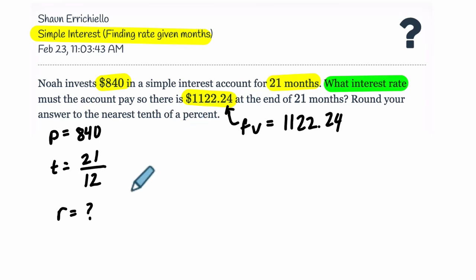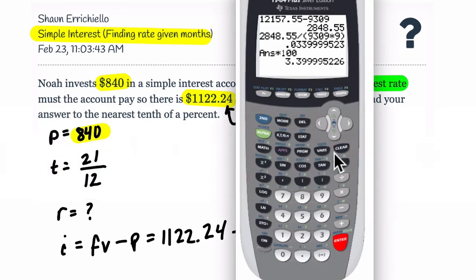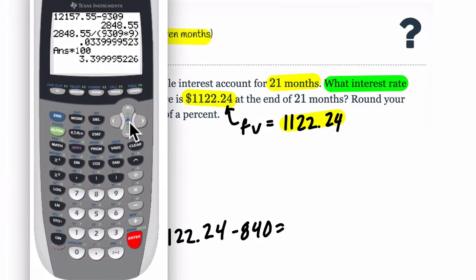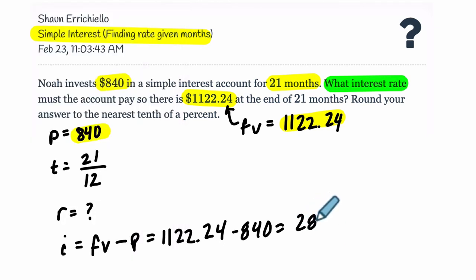Alright. So round your answer to the nearest tenth of a percent. So we need to find the interest that we're getting in this account. And that's got to be the future value minus the principal, right? So we're doing future value, 1122.24, minus principal, 840. So that tells us how much money we're actually getting in the account over those years. What is that total interest? So let's solve that on a calculator. 1122.24 minus 840. And this is our interest, 282.24. So we have almost $300 of interest.